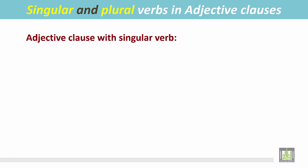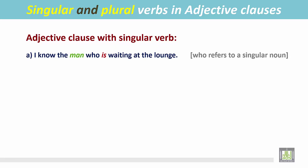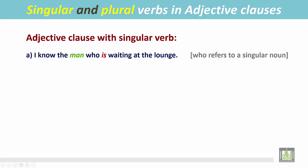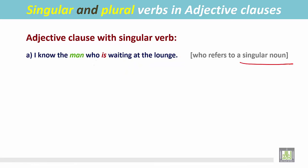Adjective clause with singular verb. See the examples. 'I know the man who is waiting at the lounge.' In this sentence, the adjective clause begins with 'who' — 'who is waiting at the lounge.' An adjective clause follows the noun immediately. The noun here is 'man,' which is a singular noun, so the verb inside the adjective clause is also singular.